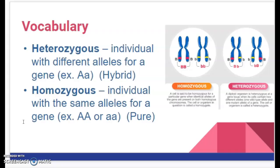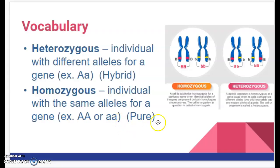Homozygous means you have the same allele twice — either two dominant alleles (big A, big A) or two recessive alleles (little a, little a). If you have that, you're considered purebred.